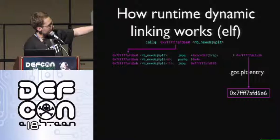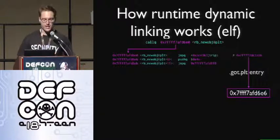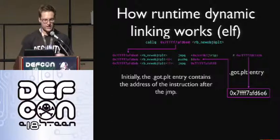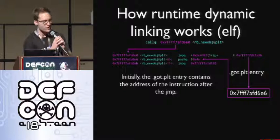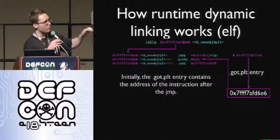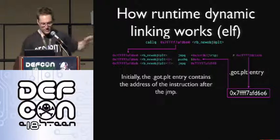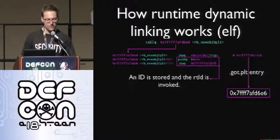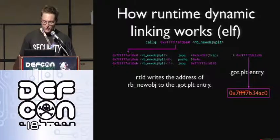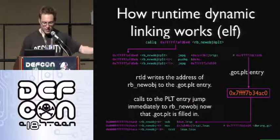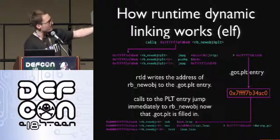If you disassemble instructions starting at that PLT address, you see three instructions: a jump, a push, and a jump. The first jump refers to an address in the GOT.PLT — that's an entry in a table. That entry initially points at the address of the push instruction right after the jump. So before the function is called for the first time, you have a jump jumping to an address stored in the table, and that address points right back to the push instruction after the jump. When you execute that push instruction, it puts an ID on the stack and invokes the runtime dynamic linker. The runtime dynamic linker finds the function, then fills in its address in the table so subsequent calls go directly to the function instead of going through the push again.